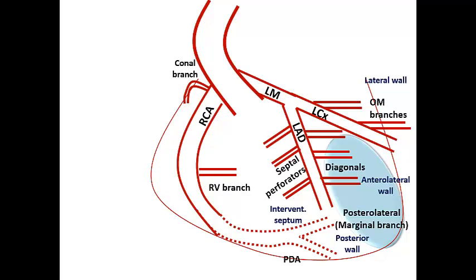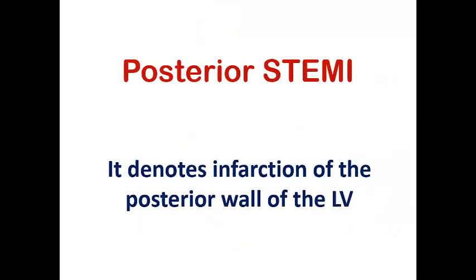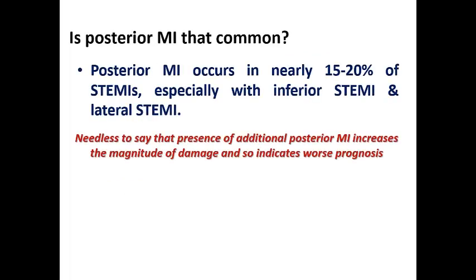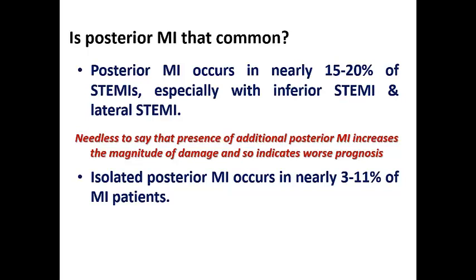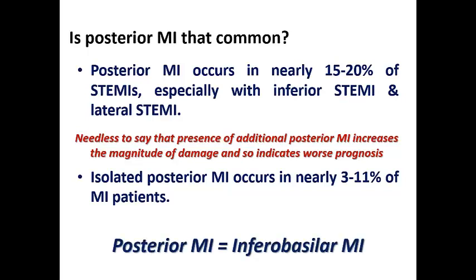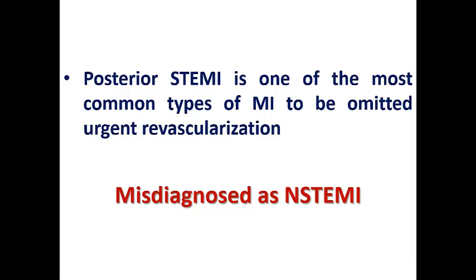The posterior wall is one of the forgotten walls of the left ventricle, which is prone to infarction. Today we are focusing on posterior STEMI, which is commonly missed in clinical practice. Posterior STEMI denotes infarction of the posterior wall of the LV. It is very common, occurring in about 15 to 20 percent of STEMIs, especially with inferior and lateral STEMI. Isolated posterior MI may occur in about 3 to 11 percent, and another terminology for posterior MI is inferiobasal MI. It is one of the most common types of MI to be omitted from urgent revascularization because it is commonly misdiagnosed as non-STEMI, although it is actually a STEMI.